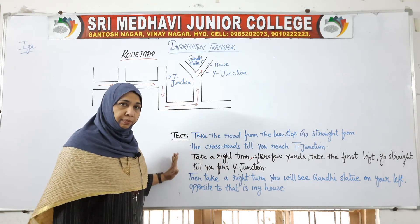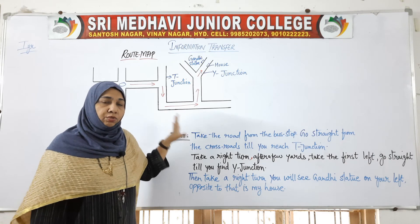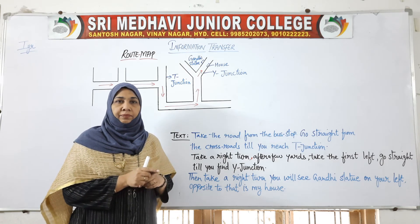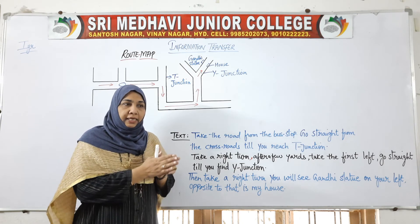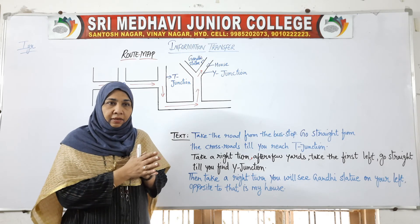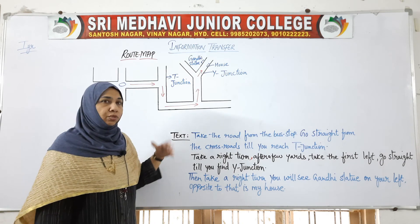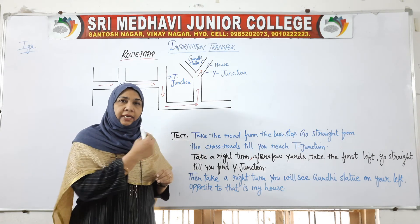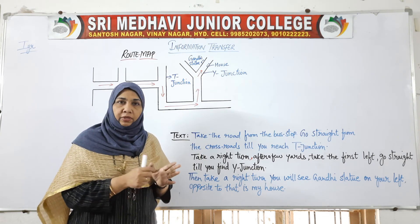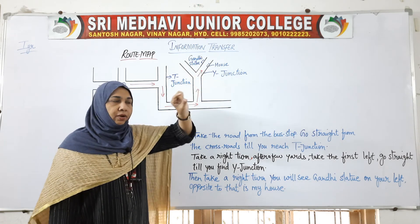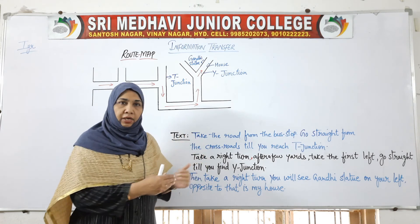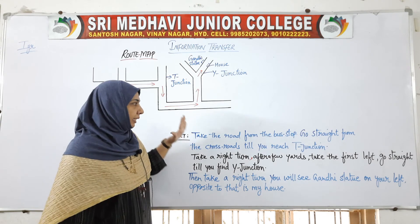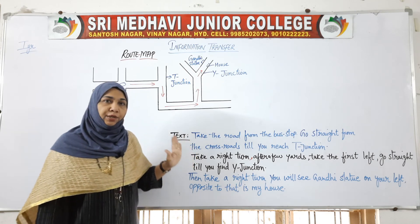If the question asks you to draw a route diagram, draw it with pencil first — neatly and in a legible manner. For landmarks like a church or mosque, don't put any religious symbols. Just put a small box, rectangle, or square, and write the name. There is no need to draw elaborate symbols. Take care of these things while drawing the route map.